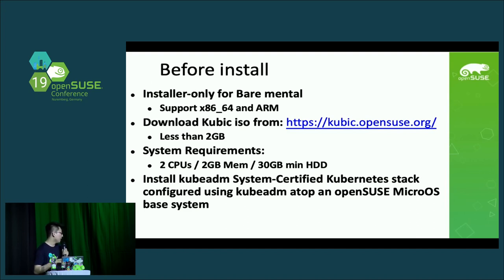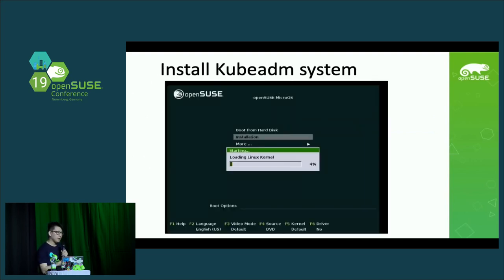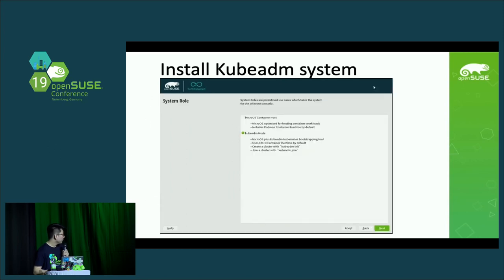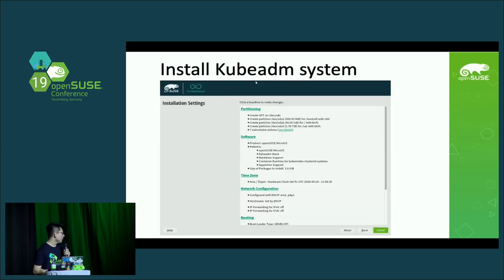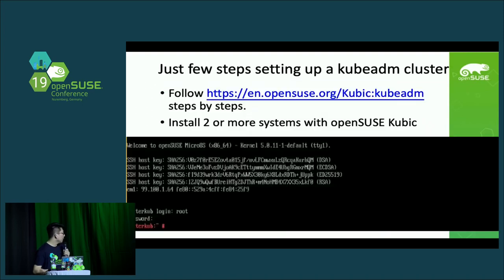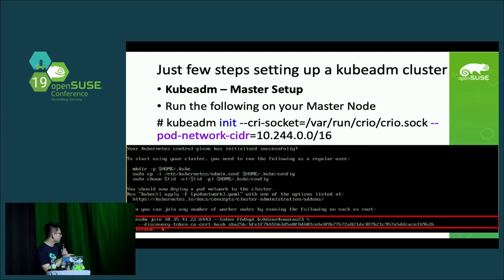We are installing Kubic with a kubeadm-certified Kubernetes stack on top of MicroOS. It's easy — just like installing Tumbleweed. First, start the install and choose Next. Then choose the kubeadm node option, keep all defaults, and choose your password. When building your Kubic cluster, you should have two or more systems with OpenSUSE Kubic installed. Follow the Kubic Wiki step by step, then run the kubeadm init command to get the token. Your master node will be built successfully.